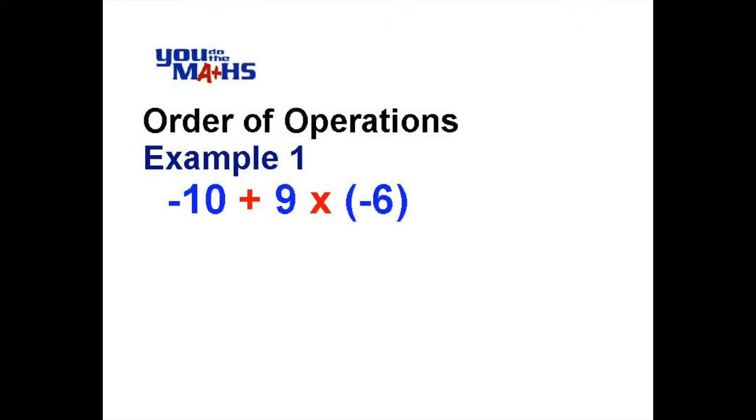Order of operations says we do the multiplication first, and then we'll worry about the addition after. So you can see in this next step we've worried purely about 9 multiplied by negative 6, and that gives us a result of negative 54.